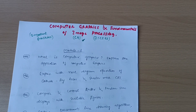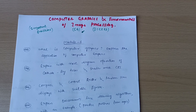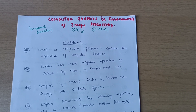Dear 6th sem CSC stream students, welcome back into another video. Hope you are all doing well. These are the important questions for the subject Computer Graphics and Fundamentals of Image Processing. Its subject code is 21CS63.